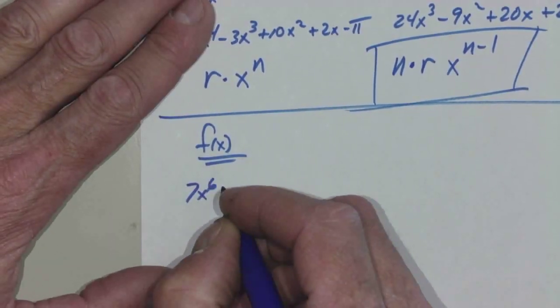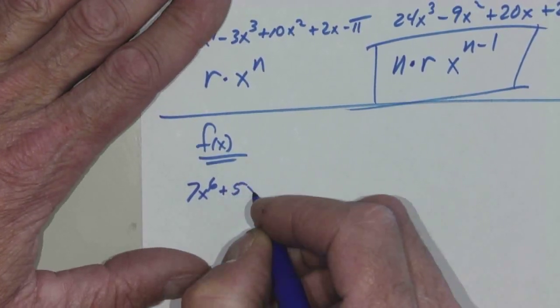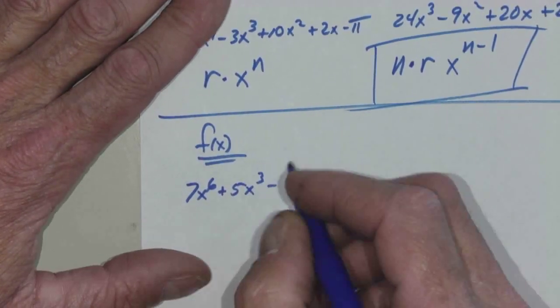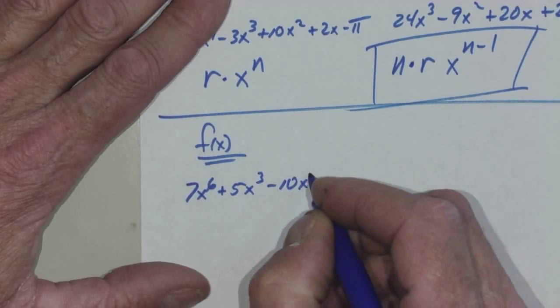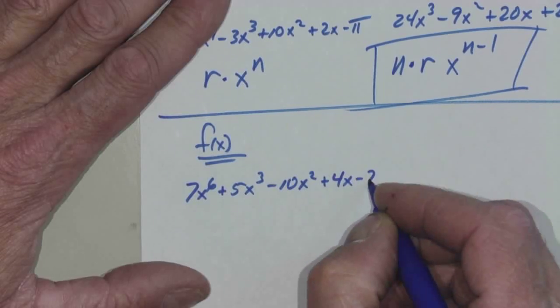Seven X to the sixth. Write these down because you're going to need. Seven X to the sixth plus five X to the third minus 10 X squared plus four X minus two.